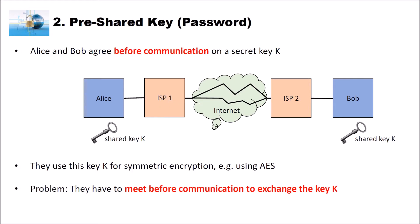There are two different methods to do so. First, Alice and Bob could share a key based on a password. They have to agree before communication on that secret key K — Alice has her key K and Bob has the same key K, and then the communication from Alice to Bob is encrypted using this shared key. The encryption is done using symmetric encryption, for instance AES. The problem here is that Alice and Bob have to meet before communication to exchange this key.